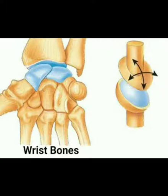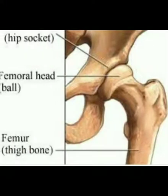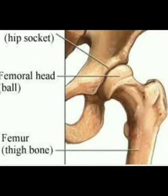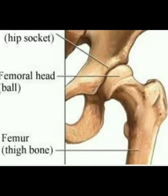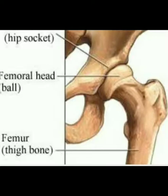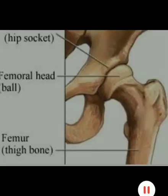Another type of joint present in our body is the ball and socket joint. These joints are more flexible than hinge joints and the bones connected to a ball and socket joint can move in many directions. One of the bones in this joint has a structure similar to a hollow cup, or socket. The ball-shaped end of the other bone fits into this socket — that is why it is called a ball and socket joint. The hip and shoulder joints are examples of such joints.